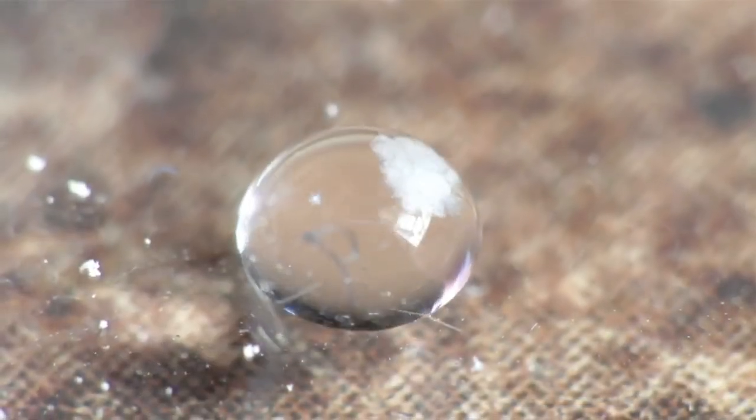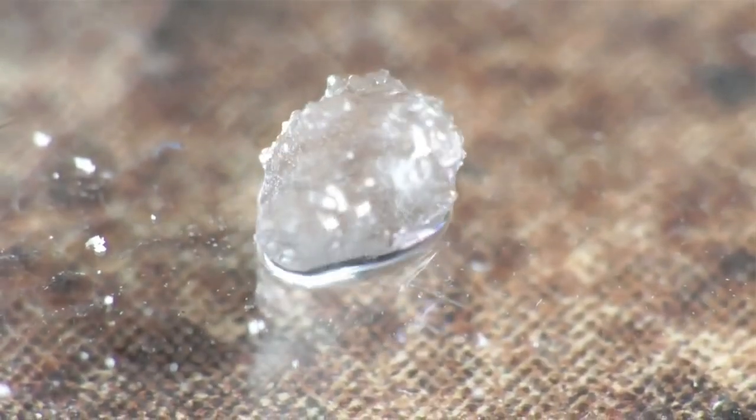So when baby diapers absorb water, there's polymers in here that will swell up to become very, very large. That's how they absorb so much water.